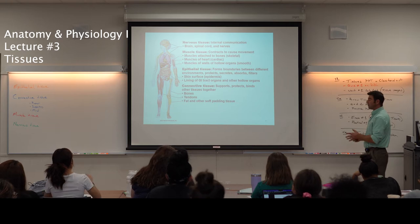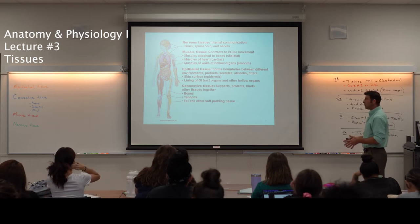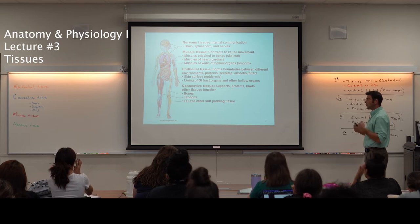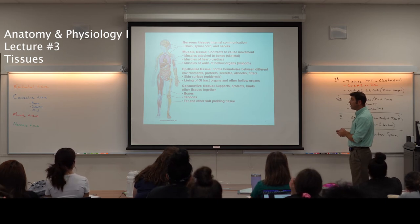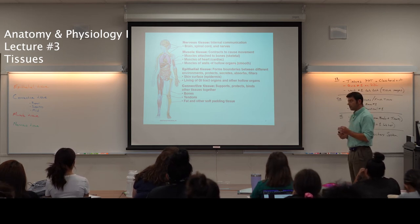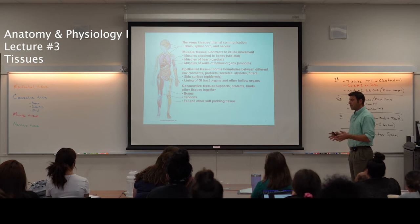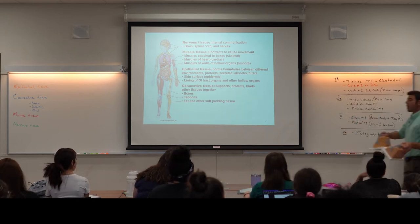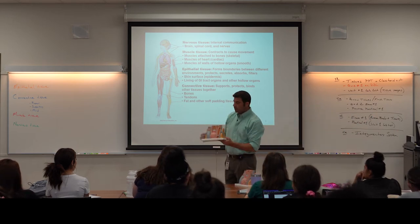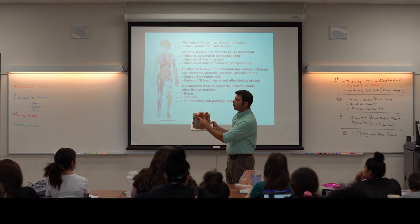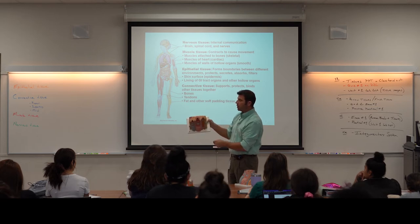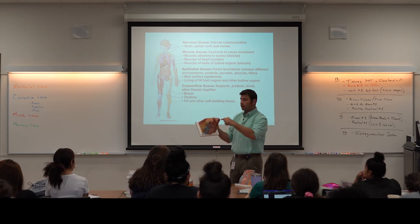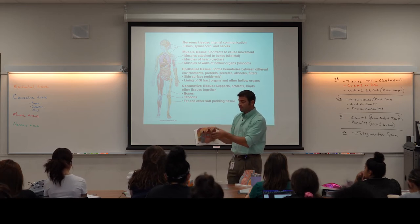Muscle tissue: there's skeletal muscle tissue that allows you to move around and write notes. There's cardiac muscle tissue that pumps blood through the vessels. There is smooth muscle found in the walls of blood vessels and in the walls of the digestive system. These models show smooth muscle because they're cross sections through blood vessels — the middle one is an artery and on either side are veins — and you can see a layer of smooth muscle in the walls. I have a microscope set up looking through the walls of a blood vessel so we can see smooth muscle.